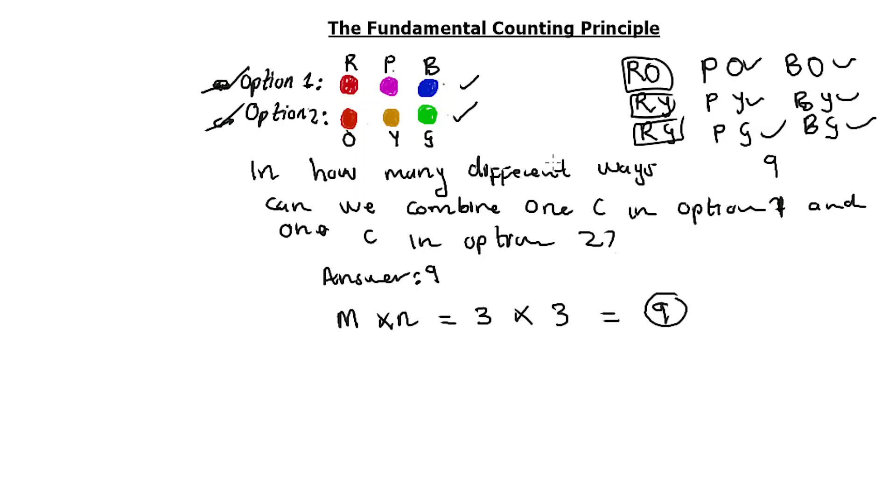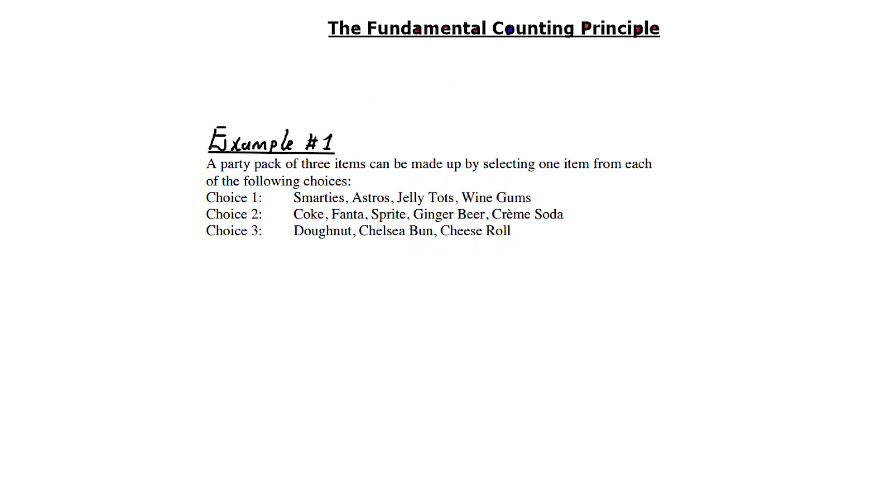Now let's look at Example Number 1. A party pack of three items can be made up by selecting one item from the following choices: Choice 1 - Smarties, Astros, Jelly Tots, Wine Gum. Choice 2 - Coke, Fanta, Sprite, Ginger Beer, Cream Soda. Choice 3 - Donut, Chelsea Bun, and Cheese Roll. So we have a sweet, a beverage, and a bun.